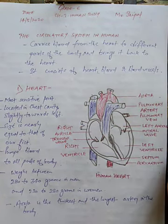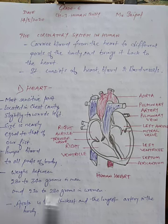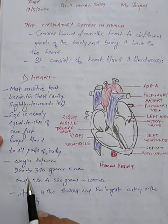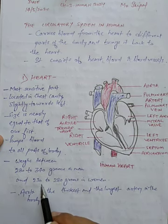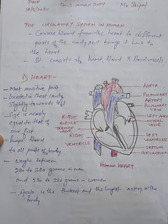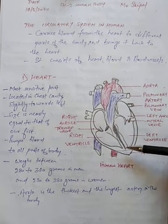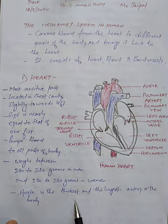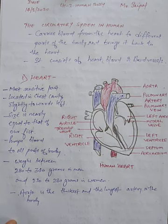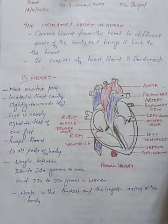The heart pumps blood to all parts of the body. Regarding weight, it weighs between 280 to 340 grams in men and 230 to 280 grams in women. In the human heart diagram, you can see the aorta, which is the thickest and the longest artery. We will discuss arteries further when we cover blood vessels.